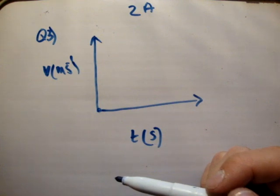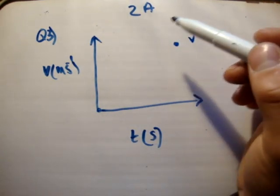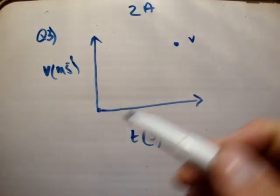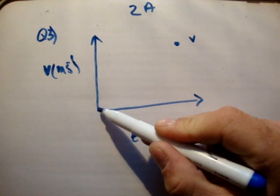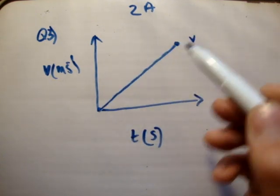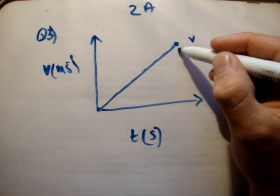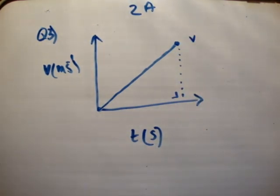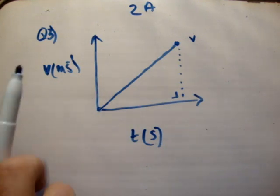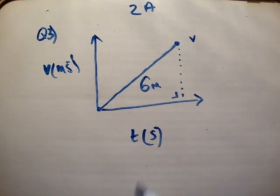It accelerates to a velocity that we don't know — I'm just going to call that v. It's uniform acceleration, which means it's accelerating in a line, and therefore you can connect the points like this. If we drop our perpendicular, we have an area. As I've said before, the area underneath the curve of a speed-time graph corresponds to the distance. So this total distance here is 6 meters.